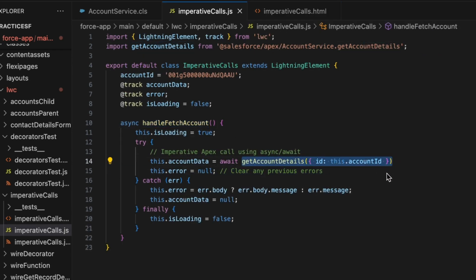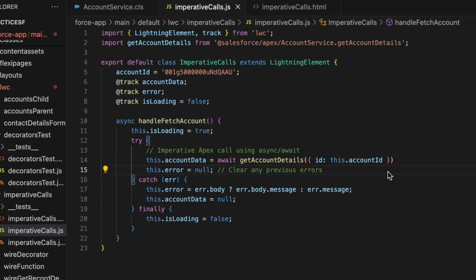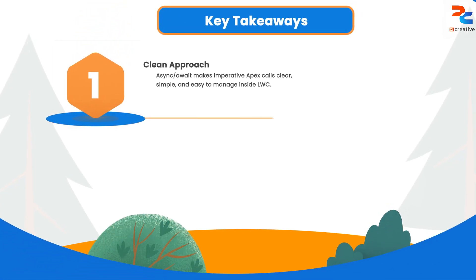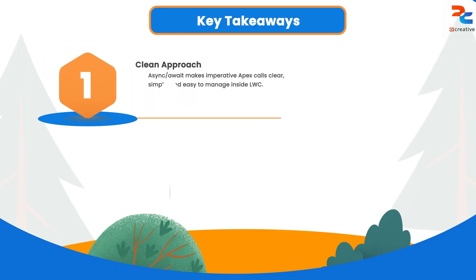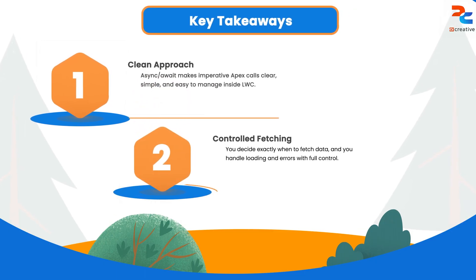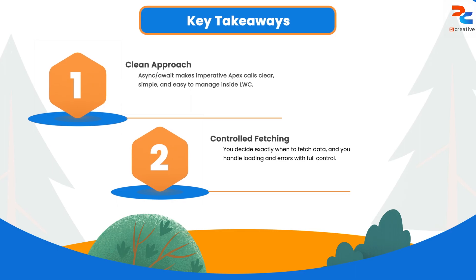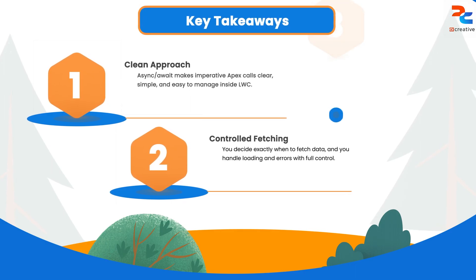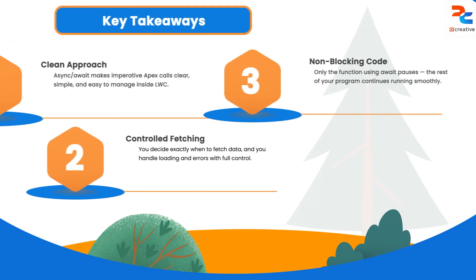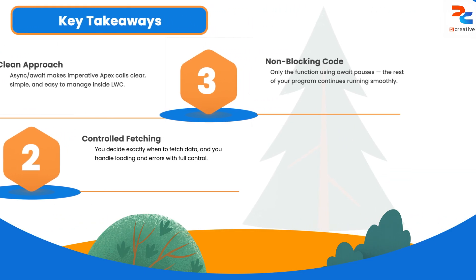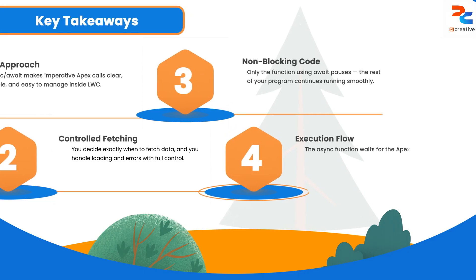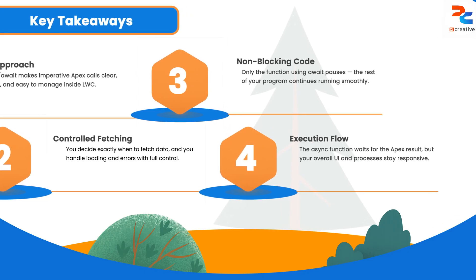That's how you make an imperative apex call with async and await, bringing clarity and simplicity to your Salesforce Lightning Web Component. This method lets you control the data fetch and handles loading and error states gracefully. The important part is that while a function awaits, the rest of your program outside this function will keep on executing — it won't freeze.